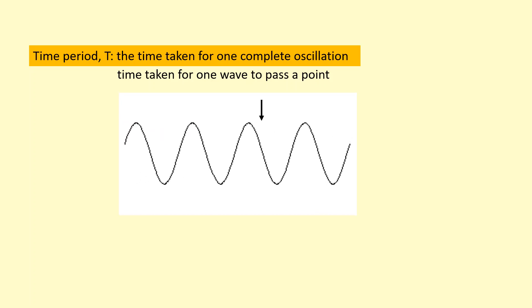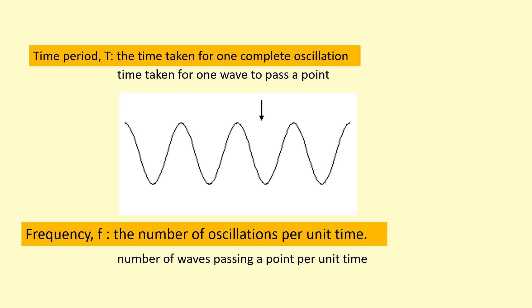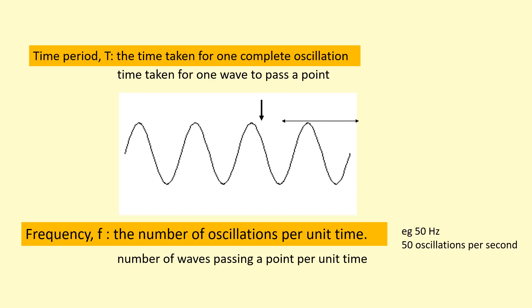Time period is closely related to frequency. Frequency is the number of oscillations per unit time, or another way of interpreting that is to measure the number of waves that pass a point per unit time. So if I measure how many waves pass in a second, I would get the frequency in Hertz. For example, if I said 50 Hertz, that would mean there are 50 oscillations or 50 waves passing per second. Hertz just means oscillations per second.